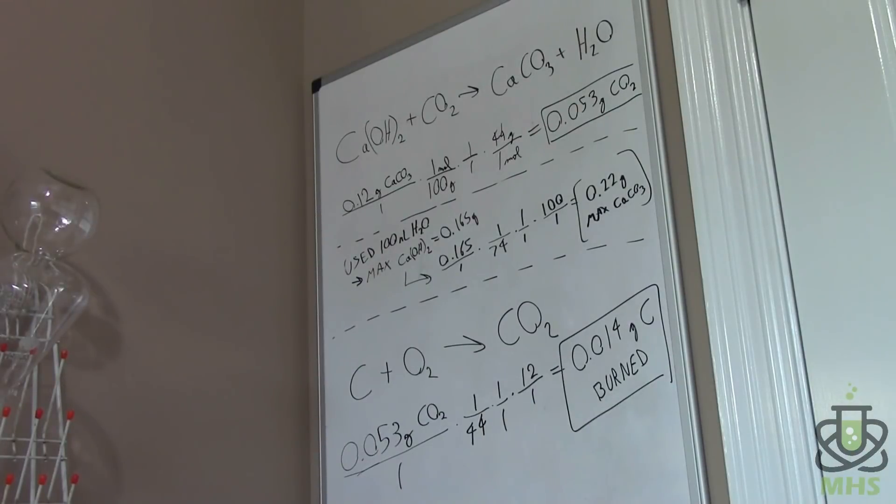Alright, so here's all my calculations for all the reactions that are going on. The top reaction is the lime water plus carbon dioxide, it gives us calcium carbonate and water. And since we measured that it was 0.12 grams of calcium carbonate produced, if you follow the math there, we end up with 0.053 grams of CO2 was absorbed by the solution.